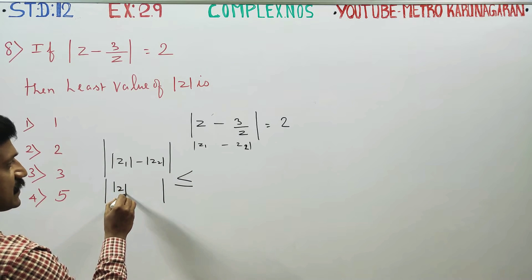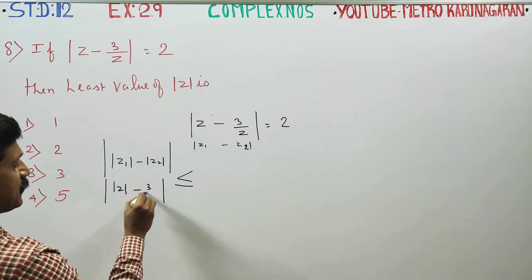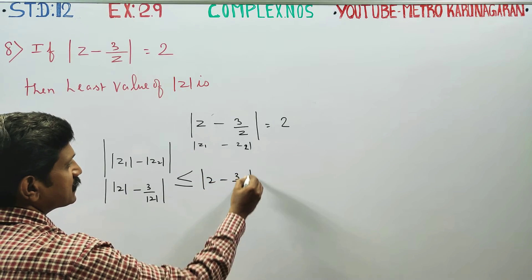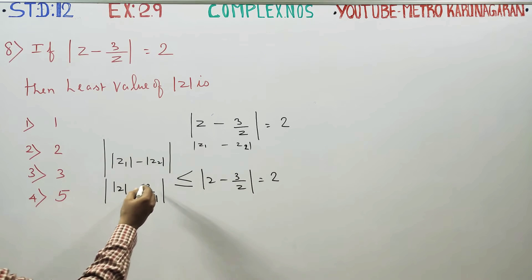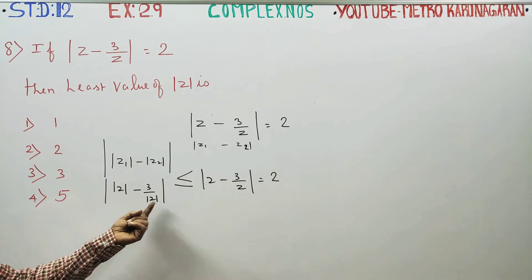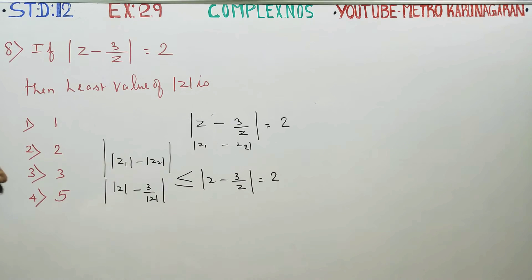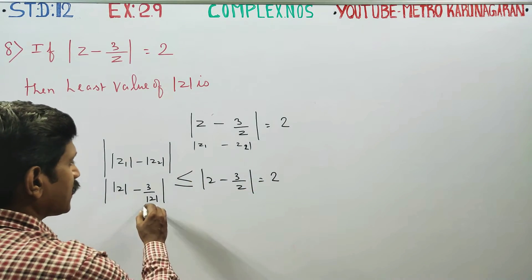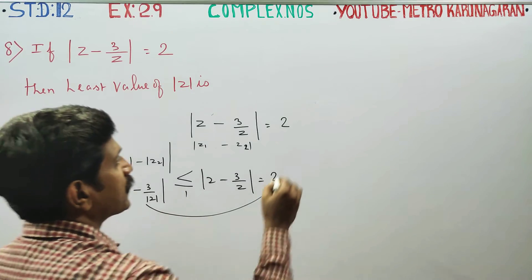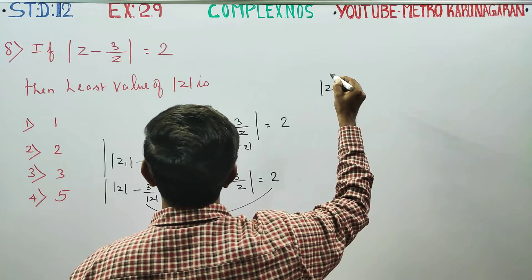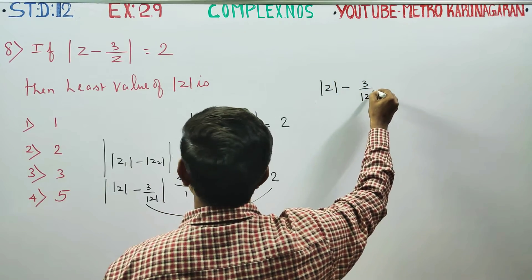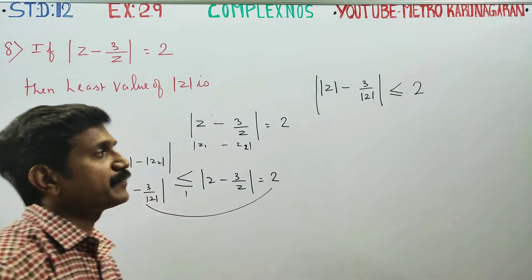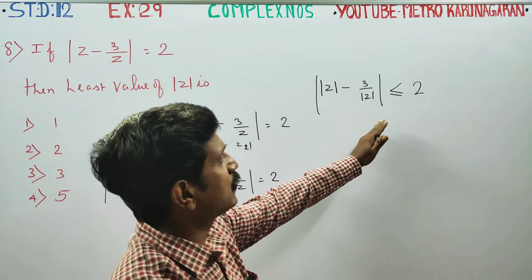In this expression, modulus of Z minus 3 by Z is less than or equal to Z minus 3 by Z, which equals 2. The modulus of Z minus 3 by Z is less than or equal to 2, and modulus of Z equals 2.